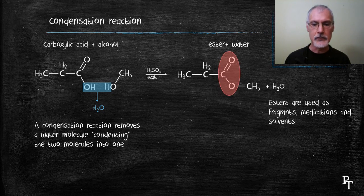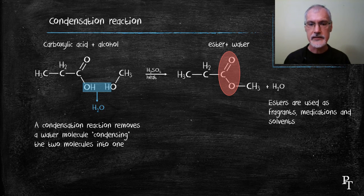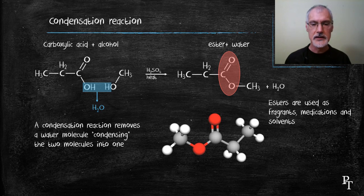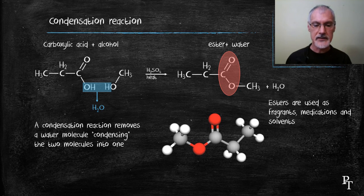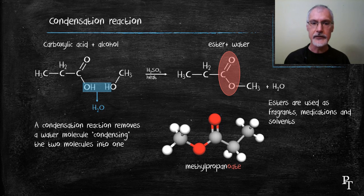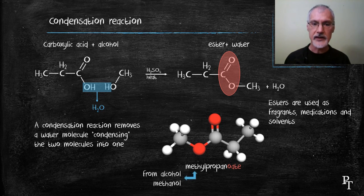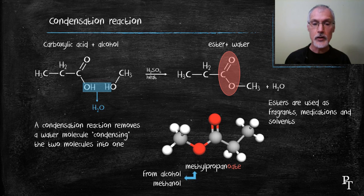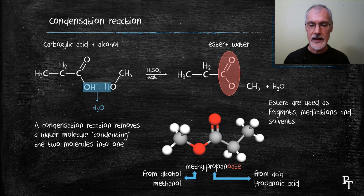Esters are known for their fragrance and odors found in medications and numerous solvents. Here's a 3D molecule of the substance that I've made. And to name this, I would call it methylpropanoate. The -oate on the end is used to indicate the formation of an ester. Methyl, because it came from methanol, and propane, because I used propanoic acid.